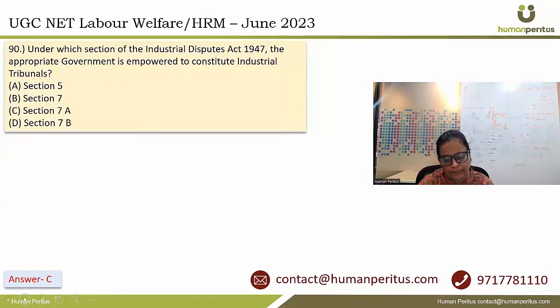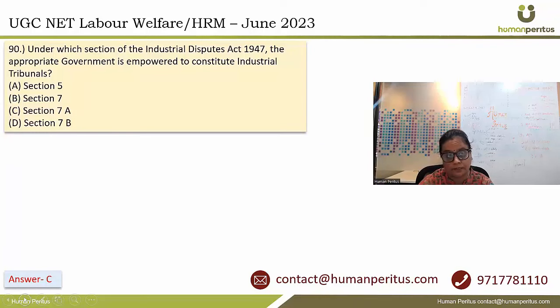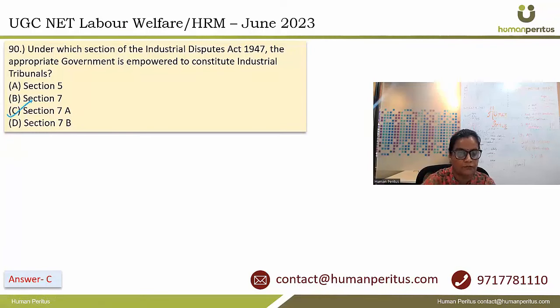Under which section of the Industrial Disputes Act 1947 is the appropriate government empowered to constitute industrial tribunals? It is Section 7A of the Act. Answer is option C.